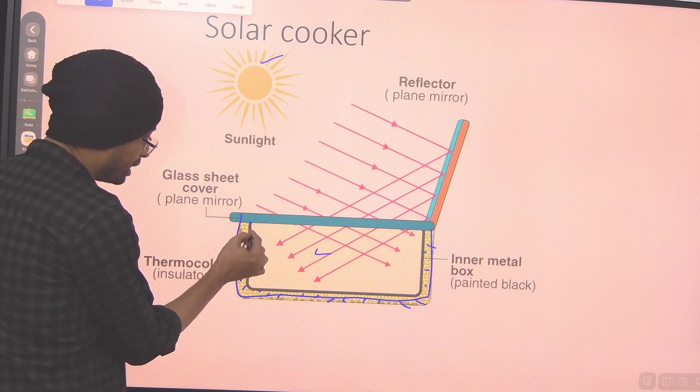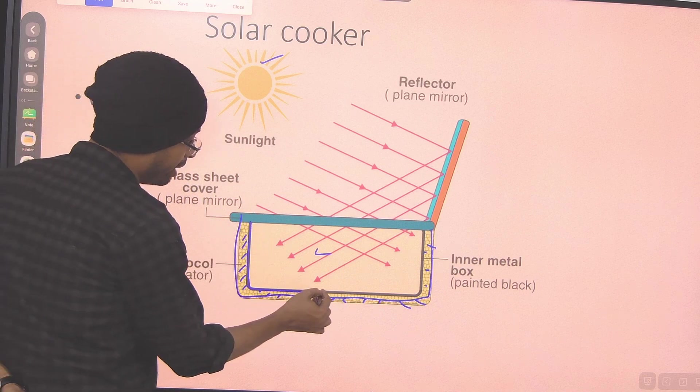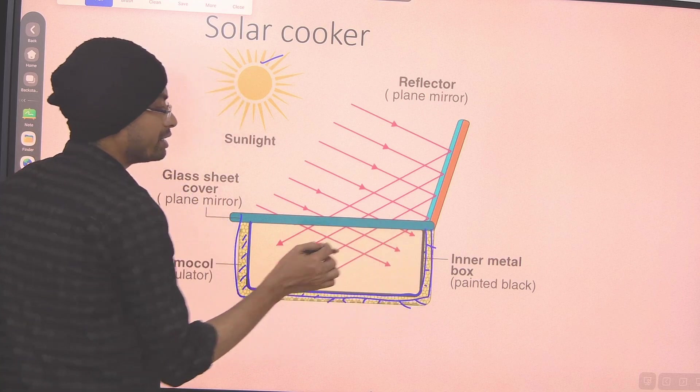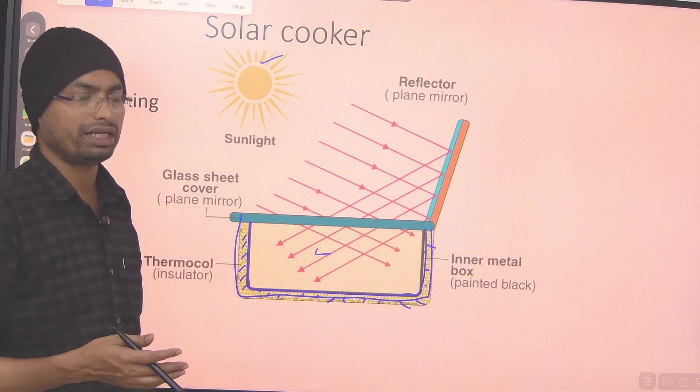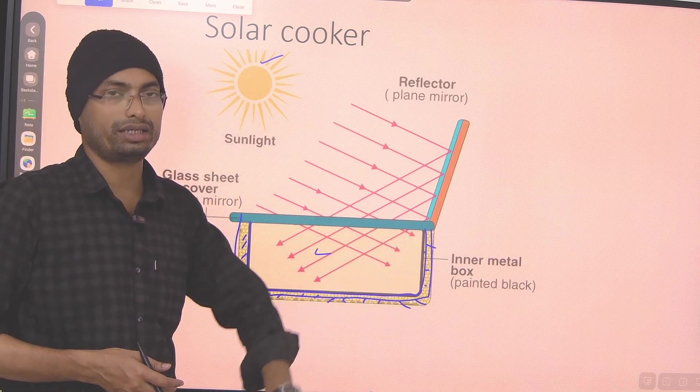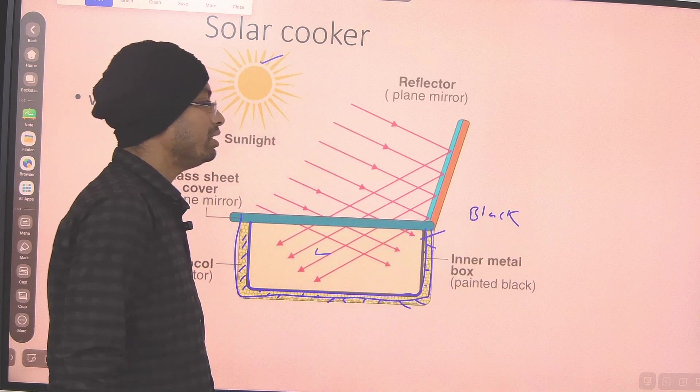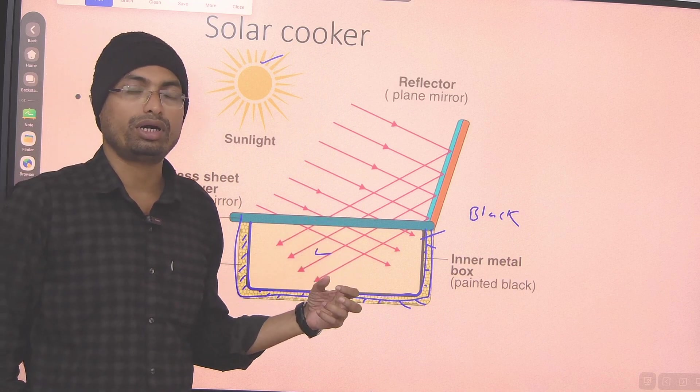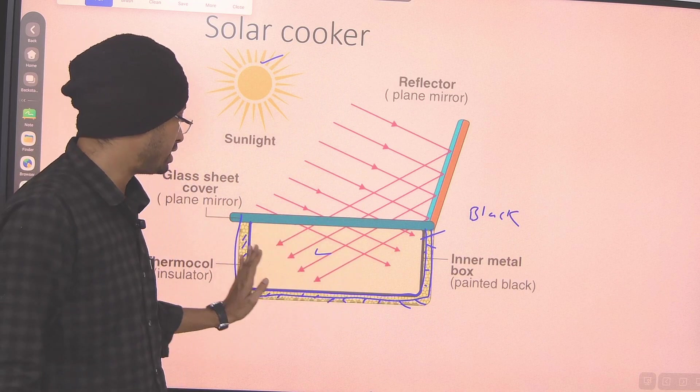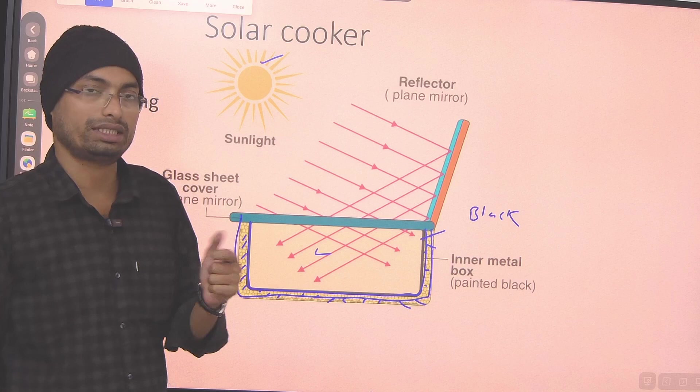Now, inside, we can see that there is a metal layer. Generally, we use an aluminum layer. And then, we paint it black color. Why do we use black color? So the light will be absorbed. So, the temperature will rise here.